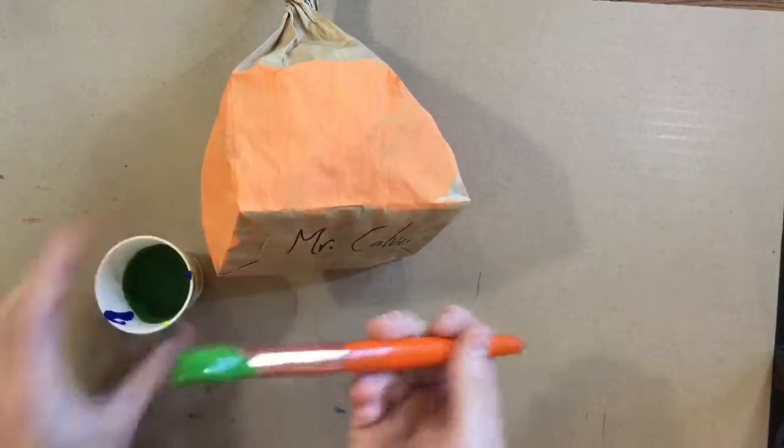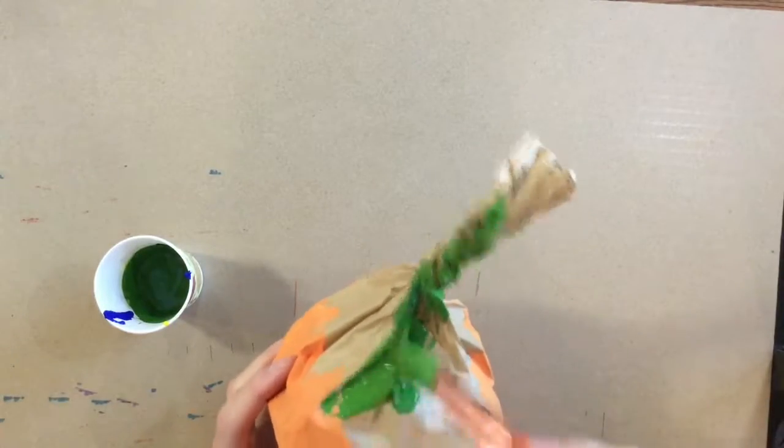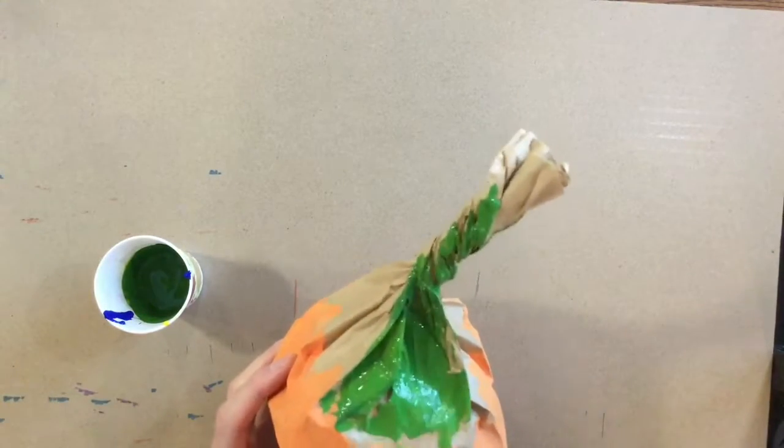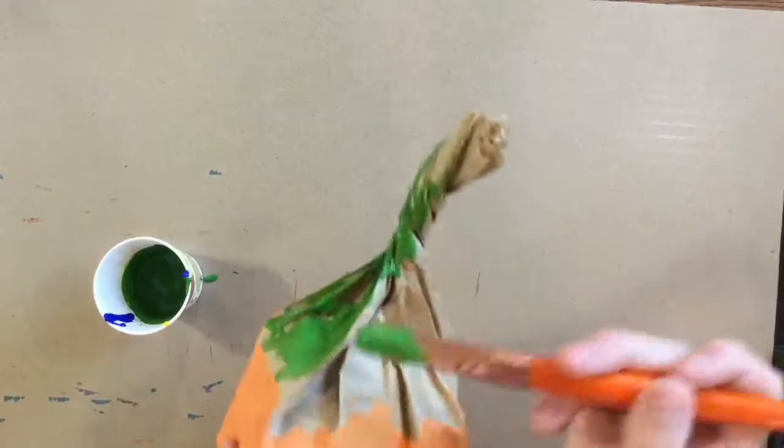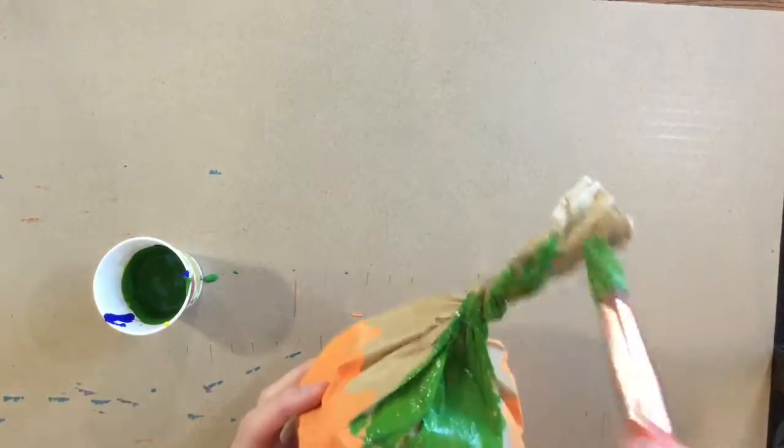Gently mixing it together, I got some green, and I'm going to paint just the stem. The stem all the way down to the orange. It's going to be pretty hard to cover up all of that paper bag. Do your best. I know there's going to be some brown showing.